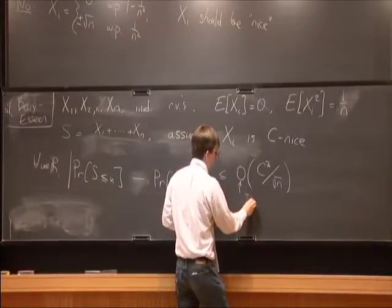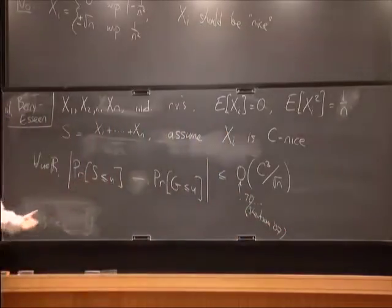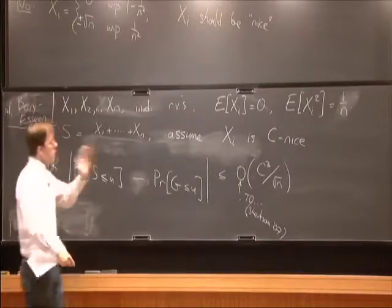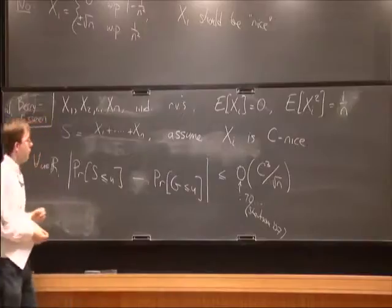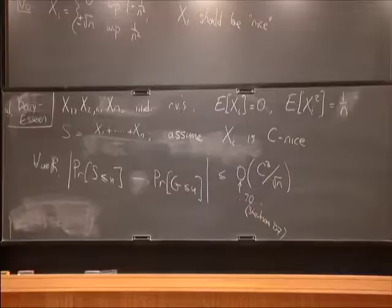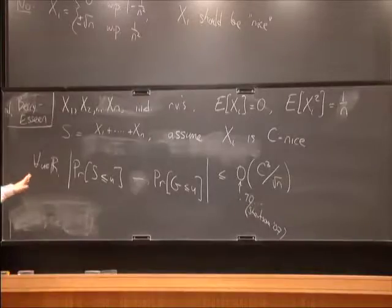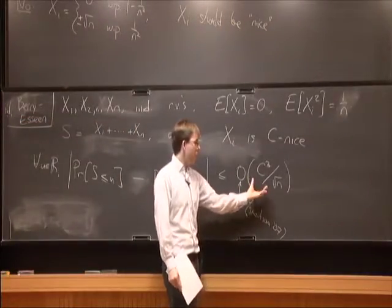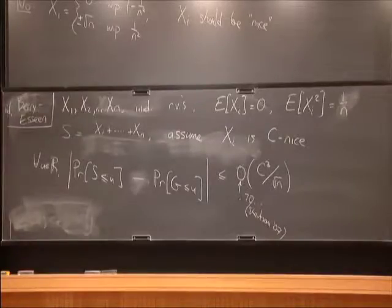This is great for us: assuming C is a constant, the error is 1/sqrt(n), so if you want epsilon error, n need only be polynomial in 1/epsilon — specifically 1/epsilon^2. This is a bit different from Chernoff bounds: this gives an error of around 1/sqrt(n), whereas Chernoff bounds give exponentially small probabilities in n. So they're different parameter regimes, though both look at Gaussian behavior.